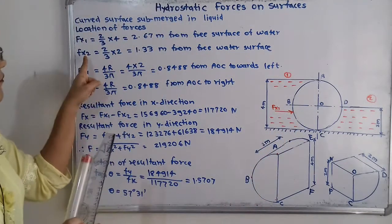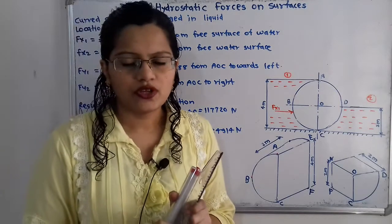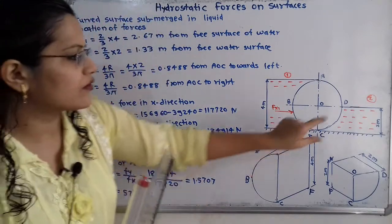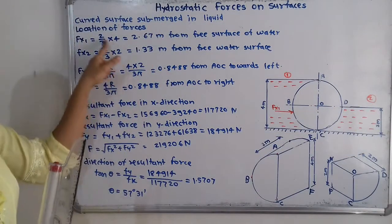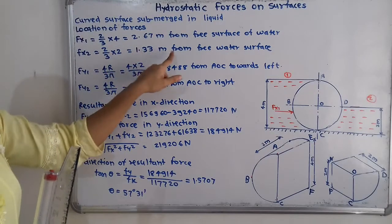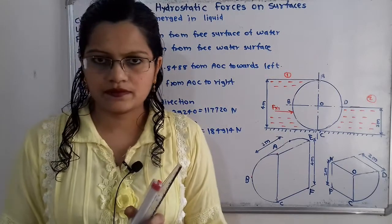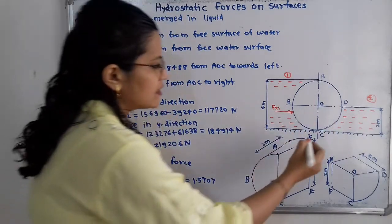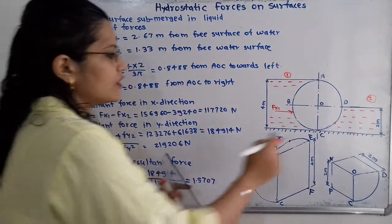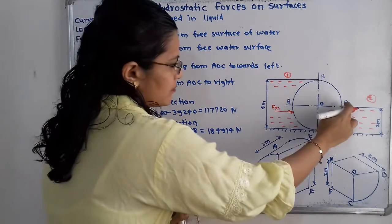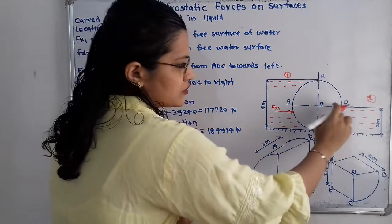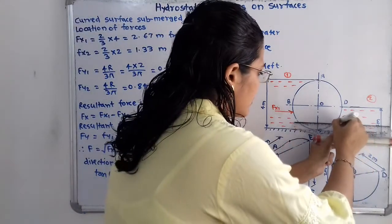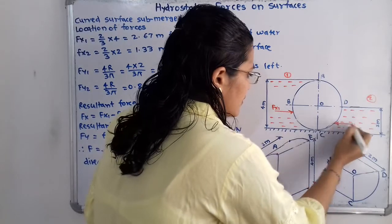For the location of FX2, using the same formula: (2/3) × 2 = 1.33 meters from the free surface of water. The midpoint is at 1 meter, so FX2 acts at 1.33 meters from the free surface — i.e., 1.33 meters below the upper horizontal line which indicates the free surface of the water on the right side.